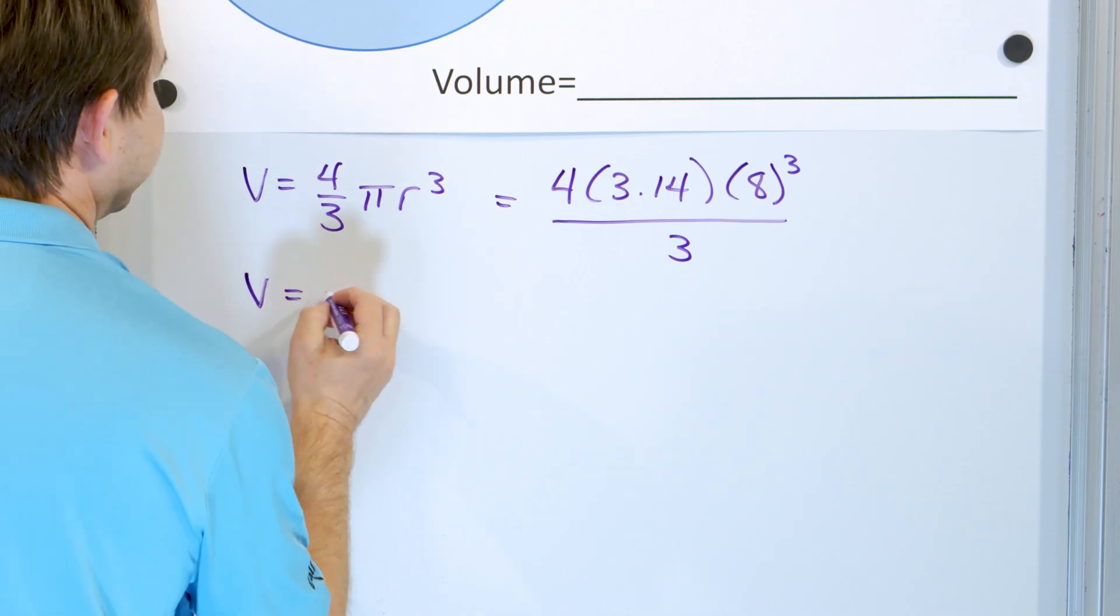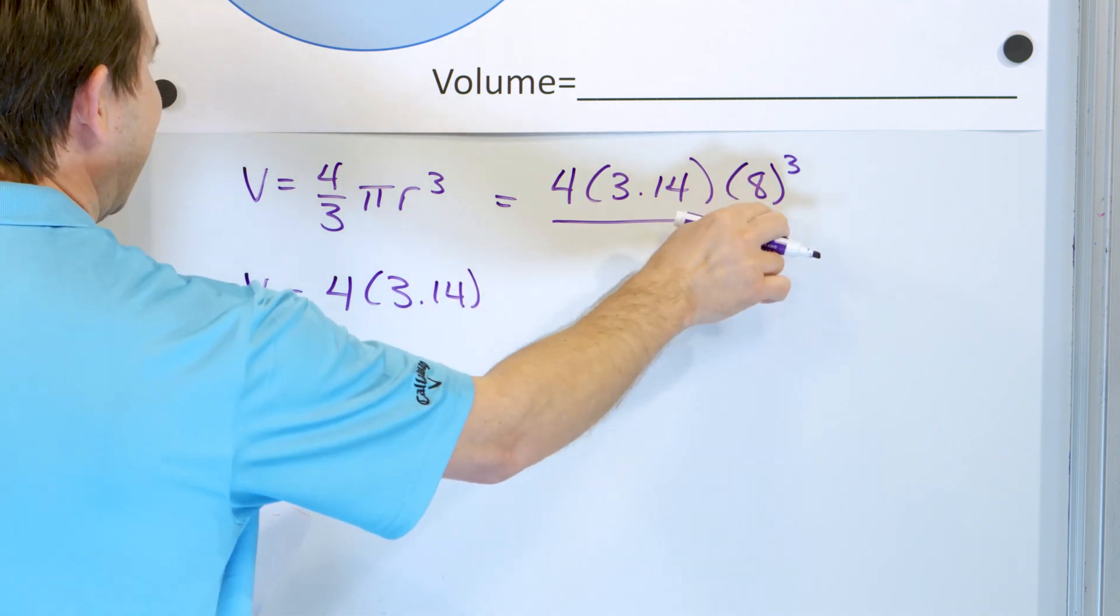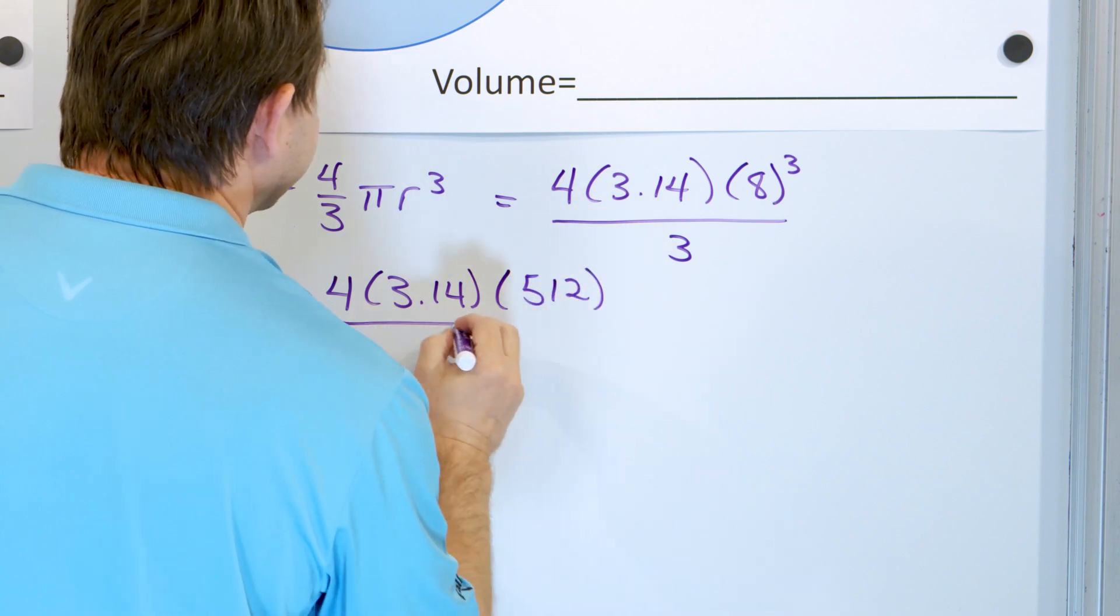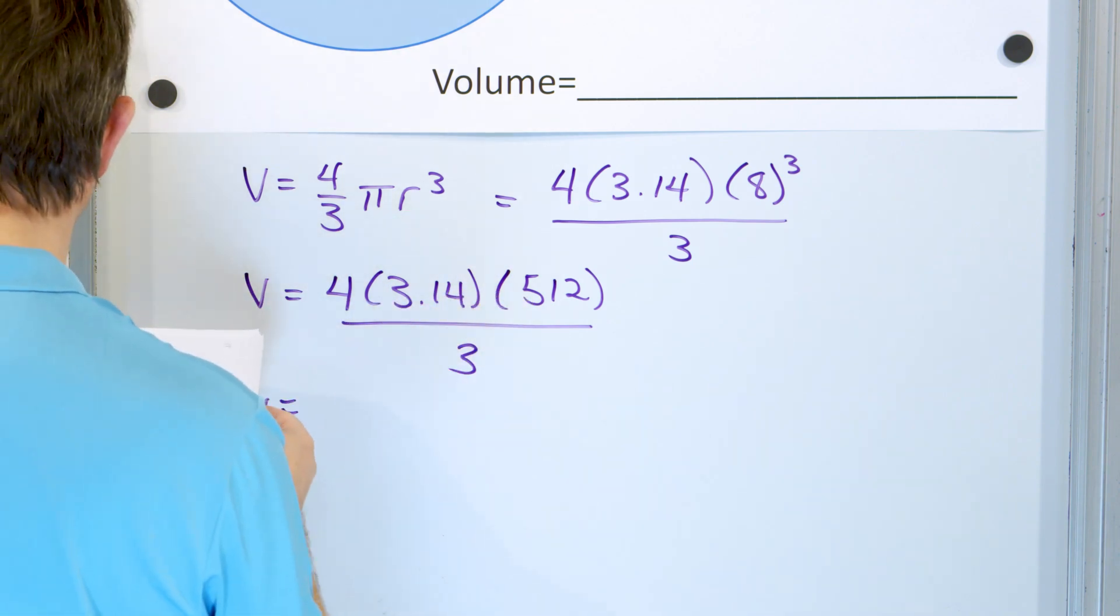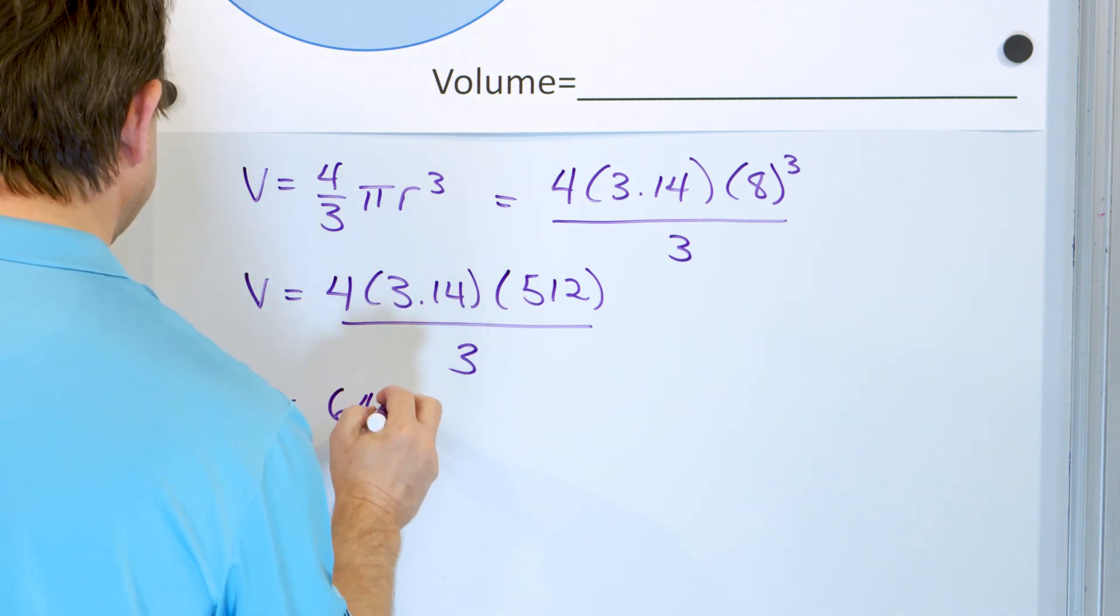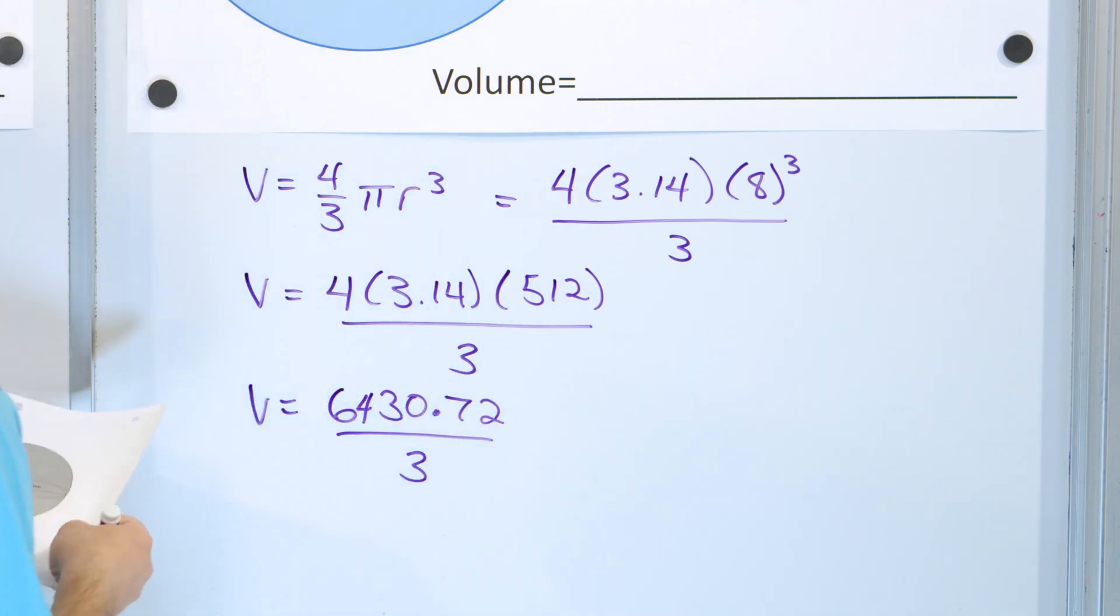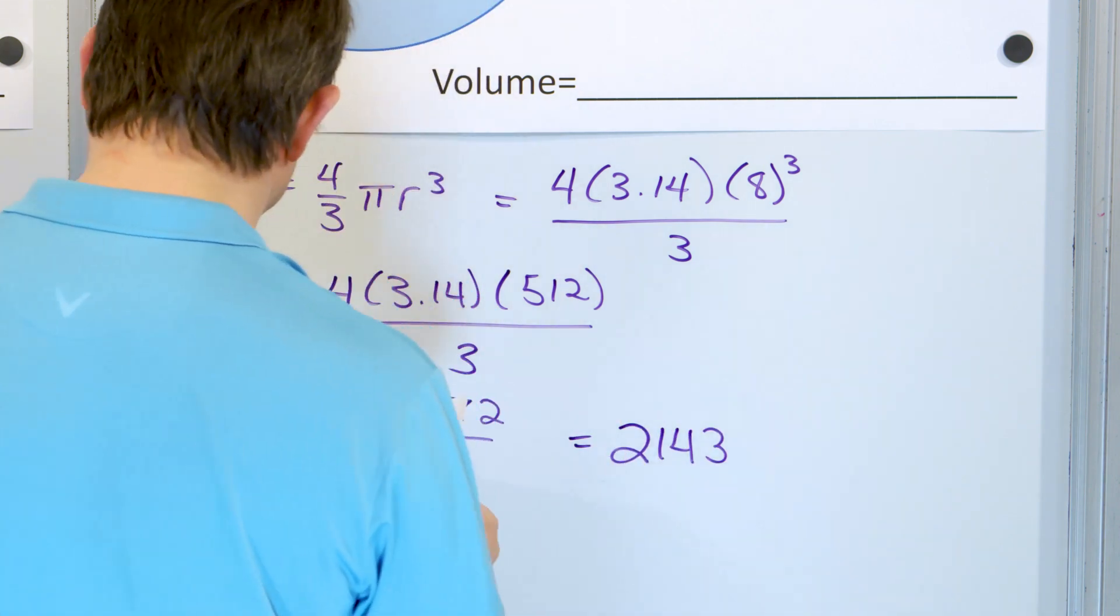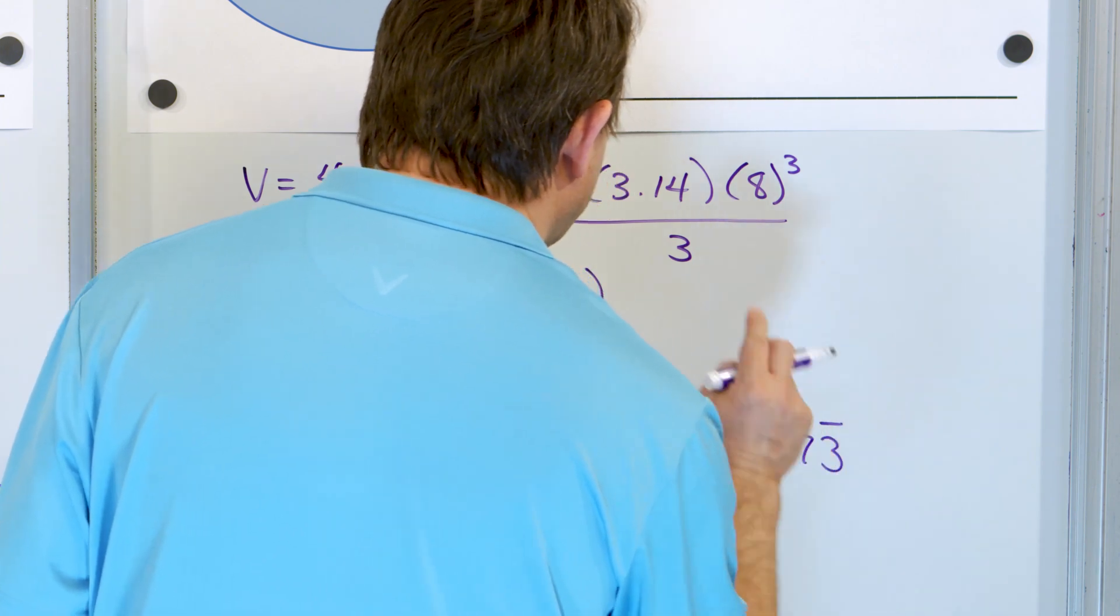And so, it's going to be four times 3.14. Now, this is eight times eight times eight, which works out to be 512, and you're dividing this by three. On the top, four times 3.14 times 512 works out to be 6430.72, and we're dividing this by three. 6430.72 divided by three, and what we get is a final answer, 2143.573 with a repeating bar on the three.